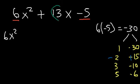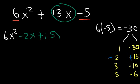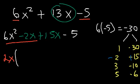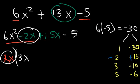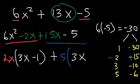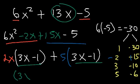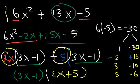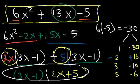So let's replace the middle term with negative 2x plus 15x — the order doesn't matter. Now we factor by grouping. In the first two terms, the GCF is 2x: 6x squared divided by 2x is 3x, and negative 2x divided by 2x is negative 1. For the last two terms, the GCF is 5: 15x divided by 5 is 3x, and negative 5 divided by 5 is negative 1. The common term is 3x minus 1, so the factored form is (3x minus 1)(2x plus 5).